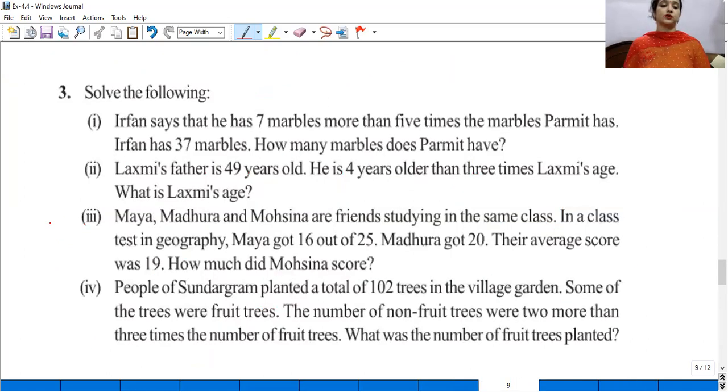Next one. So this one is again an extra question for you. Maya, Madhura and Mausina are friends studying in the same class. In a class test in geography, Maya got 16 out of 25, Madhura got 20, their average score was 19.